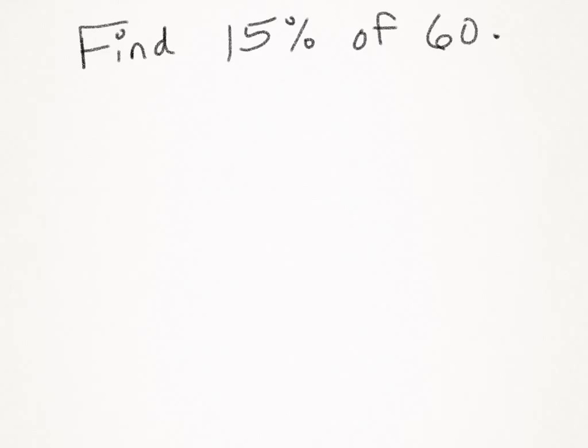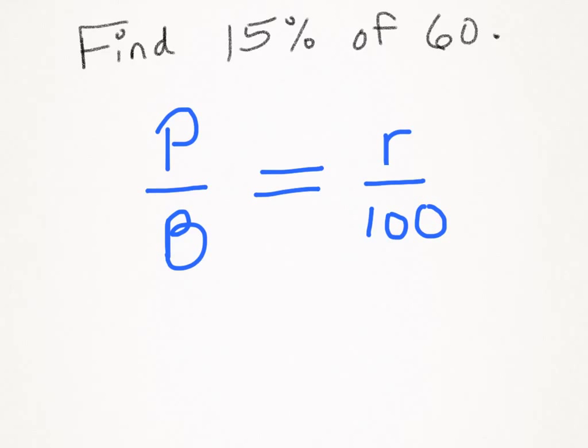You're going to have two on your own problems for today. The first one is find 15% of 60. So remember, you're setting up a proportion. So you're going to have a ratio on each side. One of those is going to be r over 100 for your percent. And then you have percentage over your base. So now it's up to you to fill in the correct numbers for each variable.